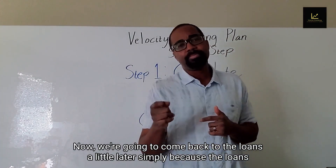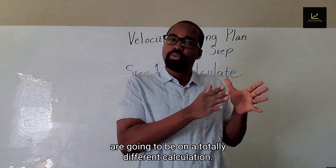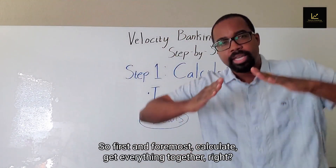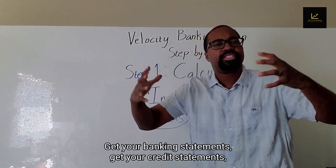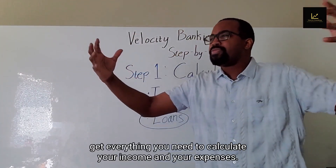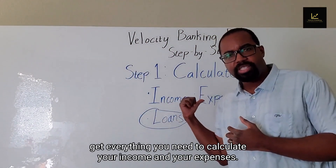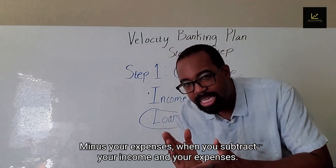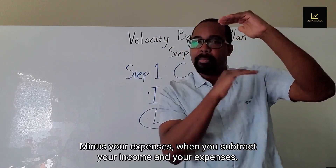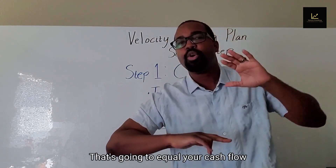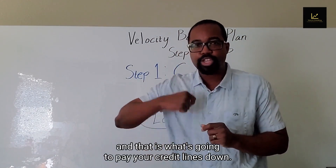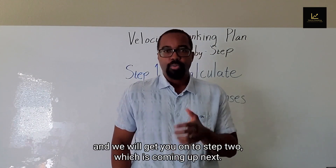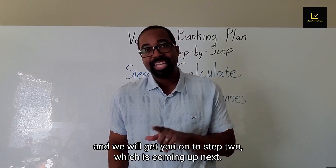The loans will be on a totally different calculation, so we'll come back to those later. First and foremost, get everything together — get your banking statements, your credit statements, everything you need to calculate your income and expenses. Subtract income minus expenses and that equals your cash flow, which is what's going to pay your credit lines down.